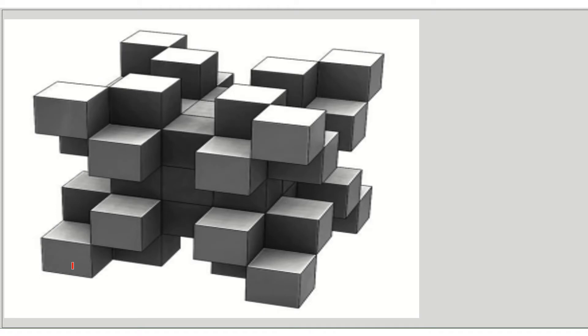This structure has phi as its length, phi as its breadth, and phi as its height — so it's phi × phi × phi, a phi-cubed structure. In this, some cubes are missing.